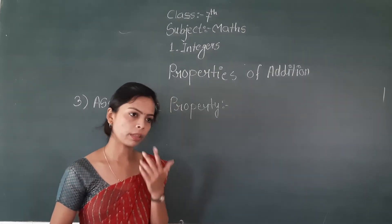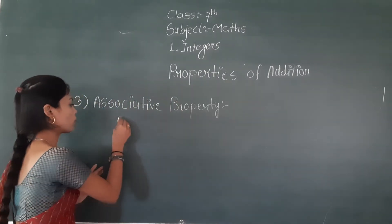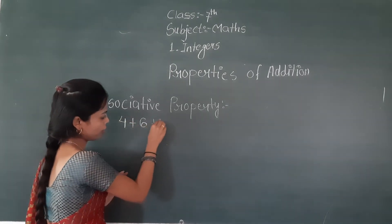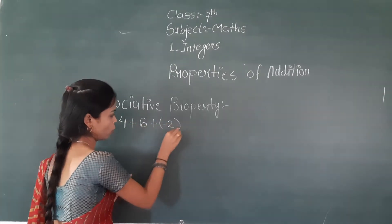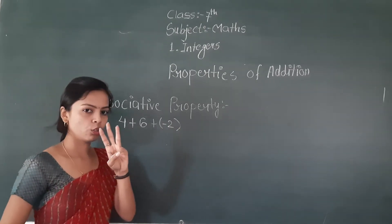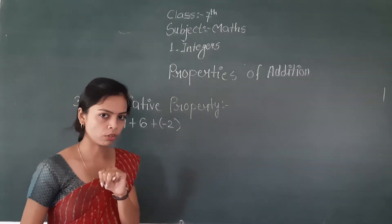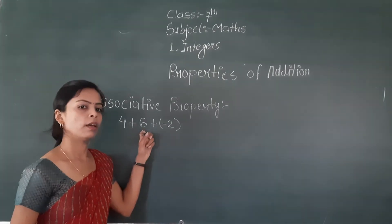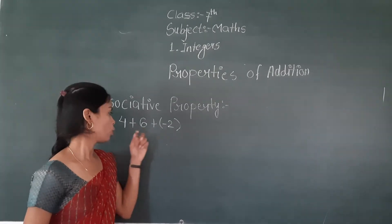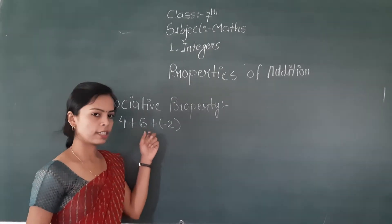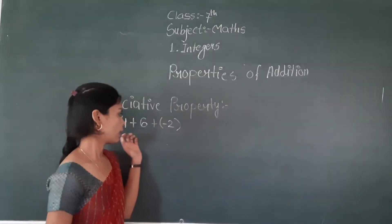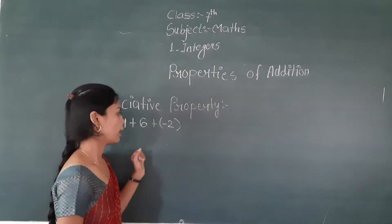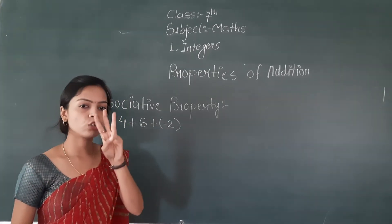I will give you some examples. You have to add three numbers — three integers: 4, 6, and minus 2. If you add them, what will be your answer? You can add them in three different ways.